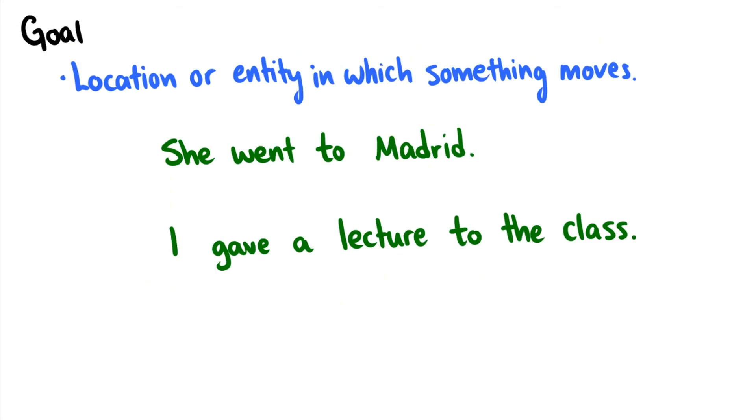The goal is a location or an entity in which something moves. If I say something like she went to Madrid, well, we have she is the agent of the sentence. She's the one initiating the action of going. And then Madrid is the location. This is usually after a preposition like to or any preposition of location, like at. She went to Madrid. That is the goal of the sentence. More specifically, I should call this a goal, not a location.